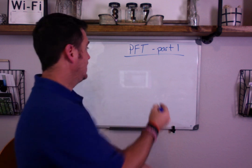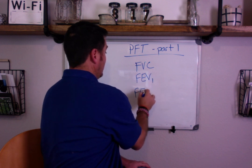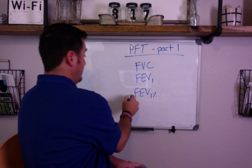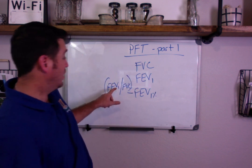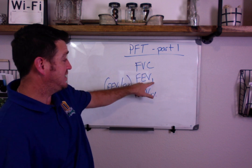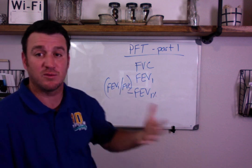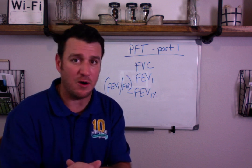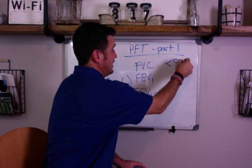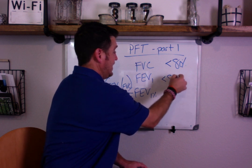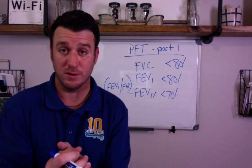Let's break down the PFT values. You have FVC, FEV1, and FEV1%. The FEV1% is when you do FEV1 divided by FVC — it may also be expressed as the FEV1 to FVC ratio. What you're looking for are the normal values: FVC less than 80% is abnormal, FEV1 less than 80% is abnormal, and FEV1% less than 70% is abnormal. Those are the numbers you need to remember.